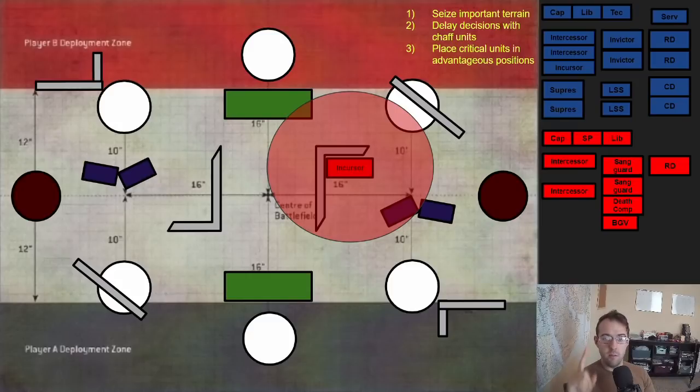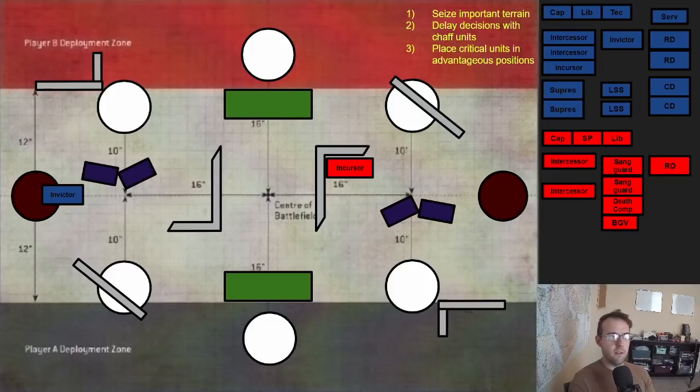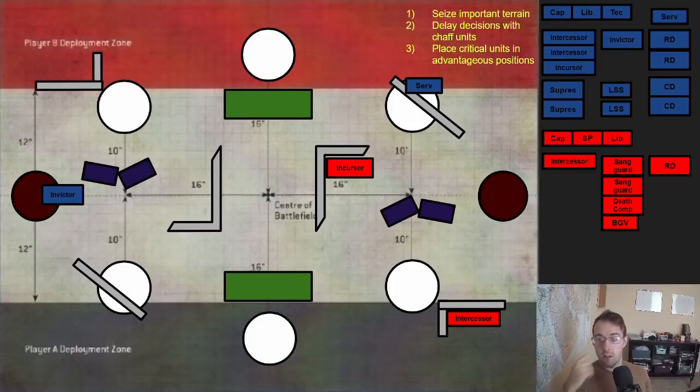So step one, seize important terrain. Then we'll go back and forth with my opponent placing their invictors in a pretty aggressive positioning because they have that capability of redeploying them later. And then I'll move on to step two here where I put an intercessor in my backfield trying to delay this decision of where I'm going to put my sanguinary guard and death company because those are my most important pieces. My opponent sadly has more units than I though, and they can place things like this 30 point unit of servitors in their backfield objective.